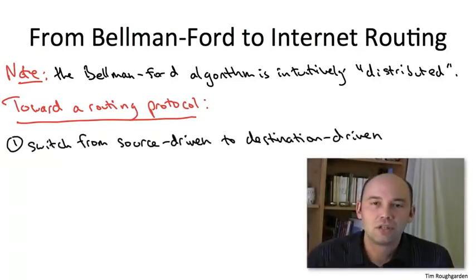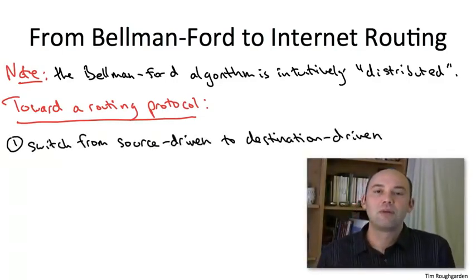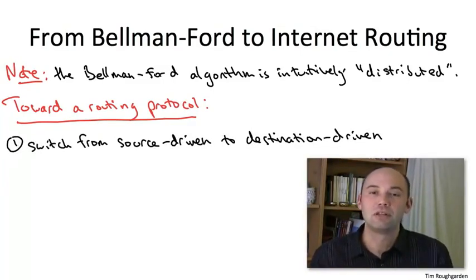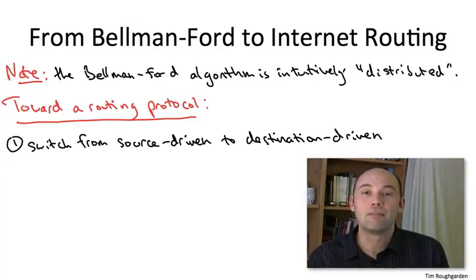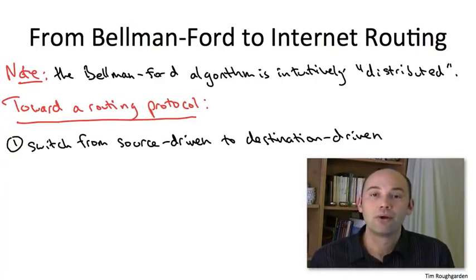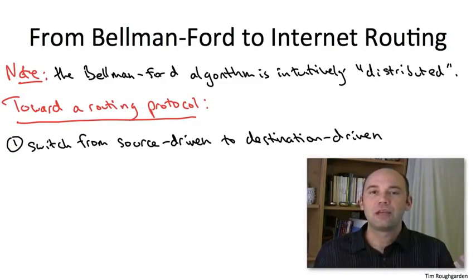The first and simplest modification to the algorithm is motivated by the fact that routing in the internet is destination driven. Given a piece of data floating around in the internet, you really don't care that much where it came from, what you really care about is where it needs to go. It's exactly the same thing as with snail mail, the way it gets routed around the globe. If I'm on vacation in, say, Croatia, and I put a postcard in the mail, I don't even need to put a return address.